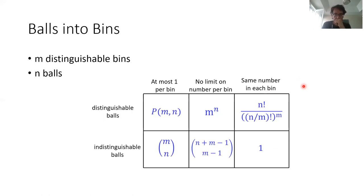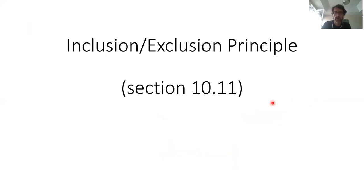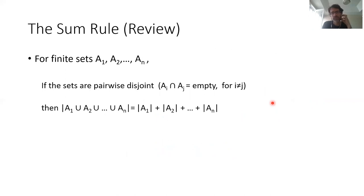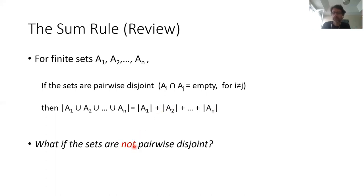Now I'll talk about the inclusion-exclusion principle — section 11. It starts with the sum rule. If you have to count all elements in a union of sets with properties A1, A2, and so on, and there are no intersections between these types, you just count each separately and add. But what happens if they're not pairwise disjoint?